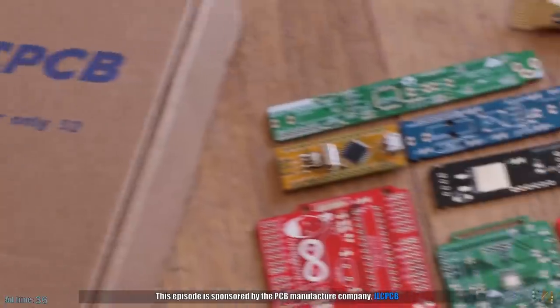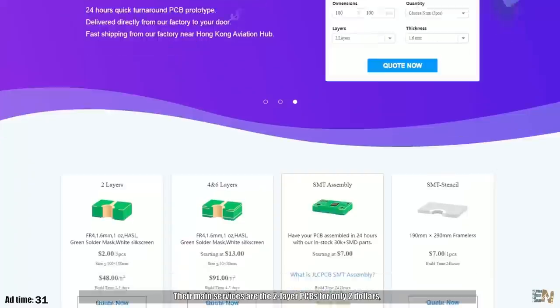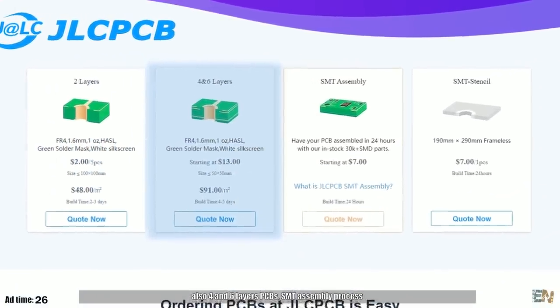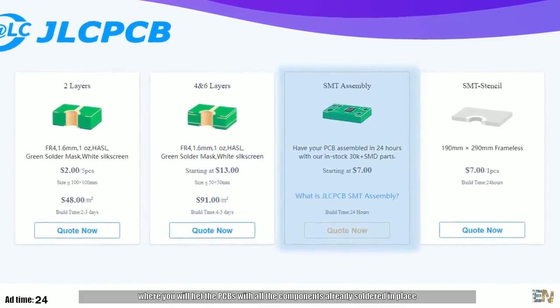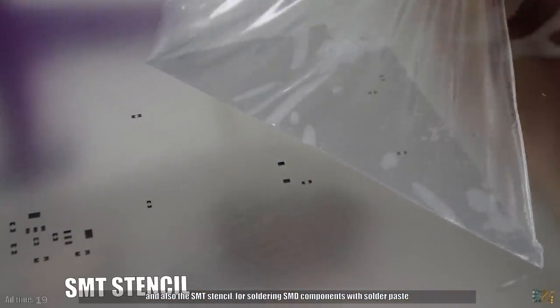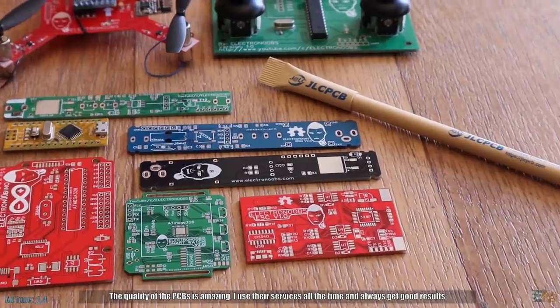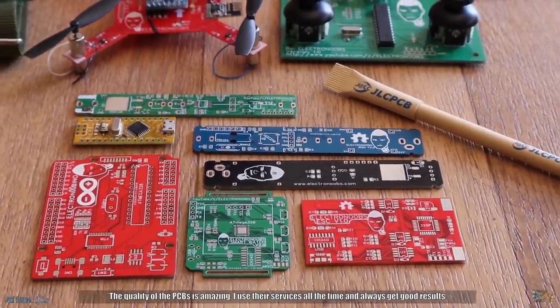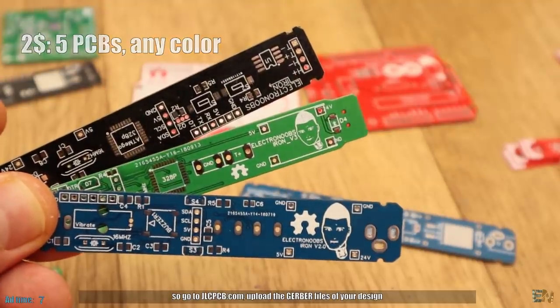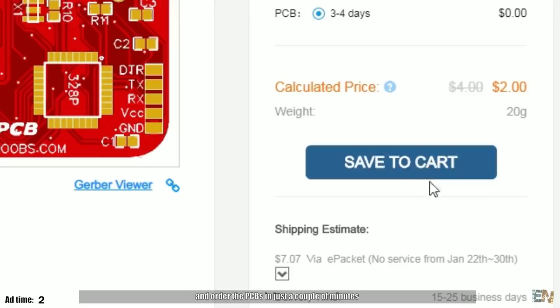This episode is sponsored by the PCB manufacturer company, JLCPCB. Their main services are the two-layer PCBs for only $2, also 4 and 6 layer PCBs, the SMT assembly process where you will get the PCBs with all the components already soldered in place, and also the SMT stencil for soldering SMT components with solder paste. The quality of the PCBs is amazing. I use their services all the time and always get good results. For only $2 you have 5 PCBs of any color that you want. So go to JLCPCB.com, upload the Gerber files of your design and order the PCBs in just a couple of minutes.